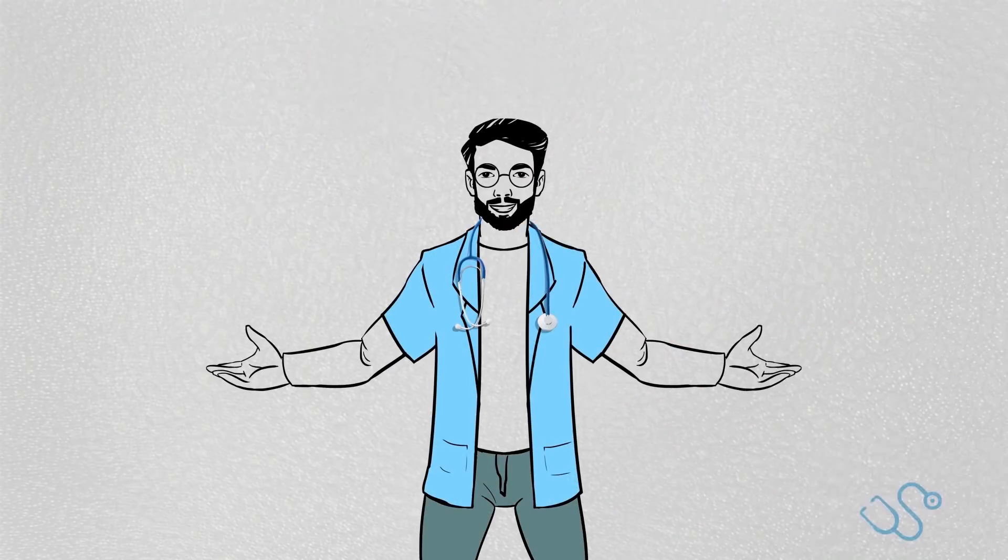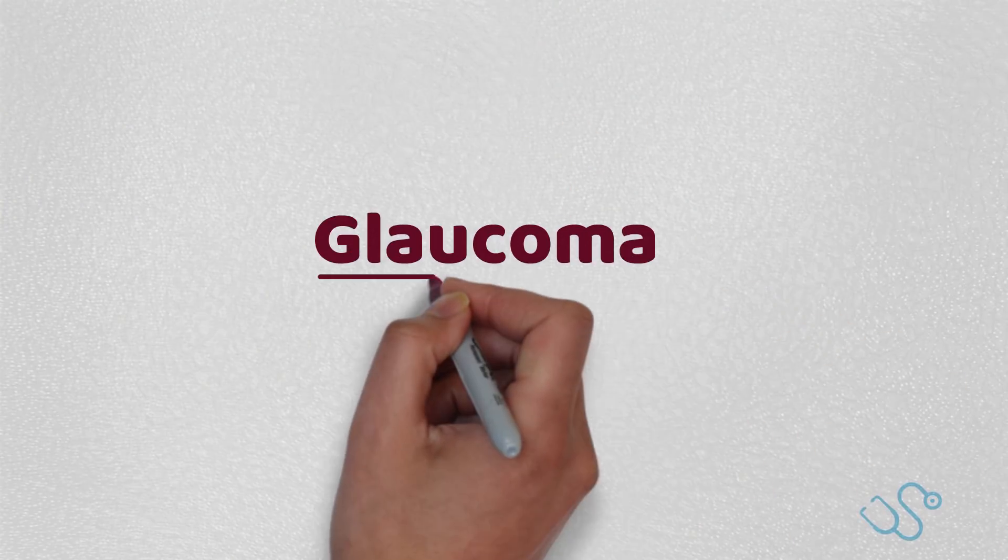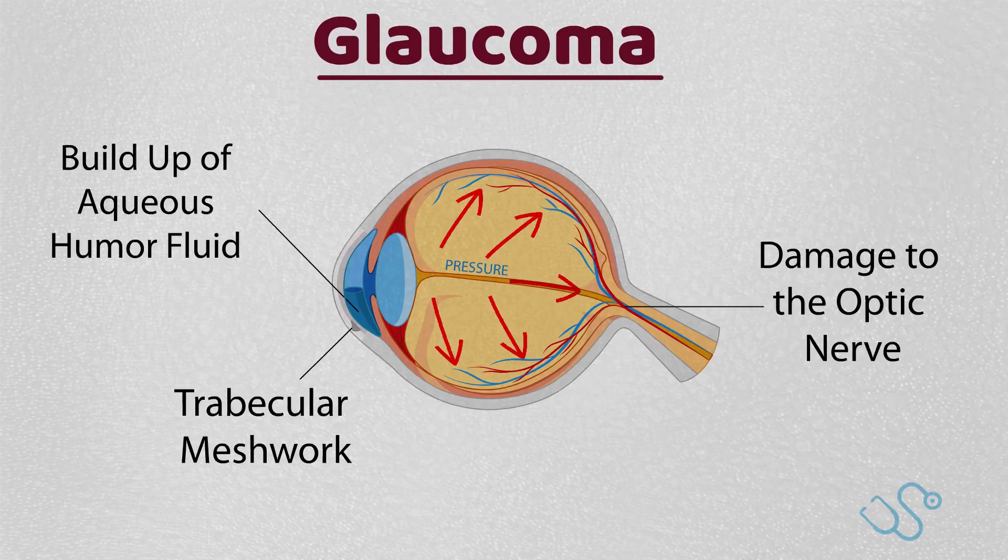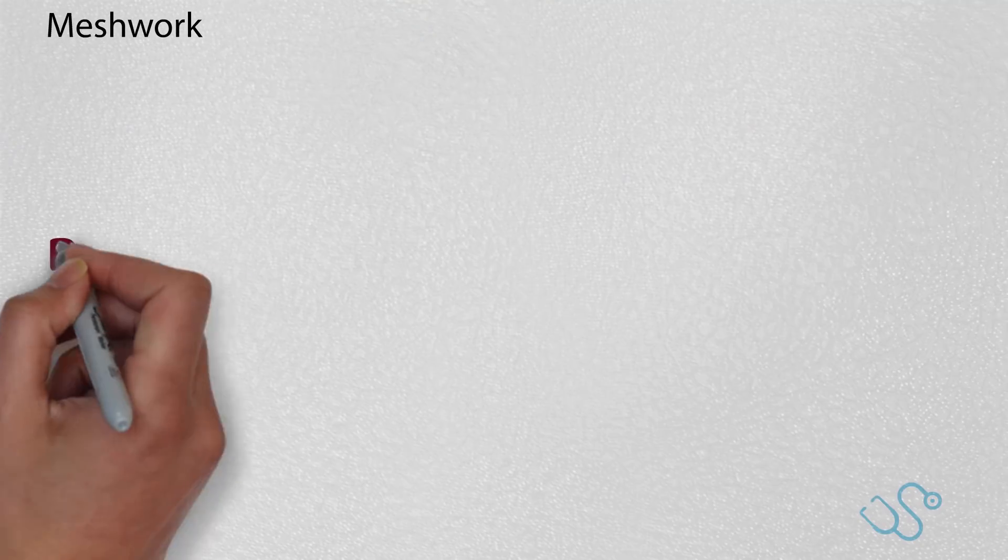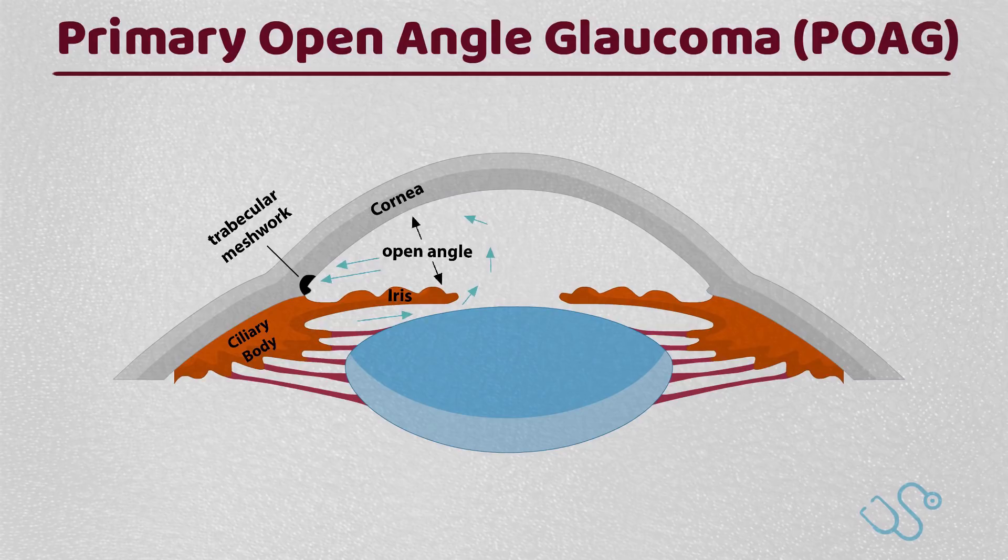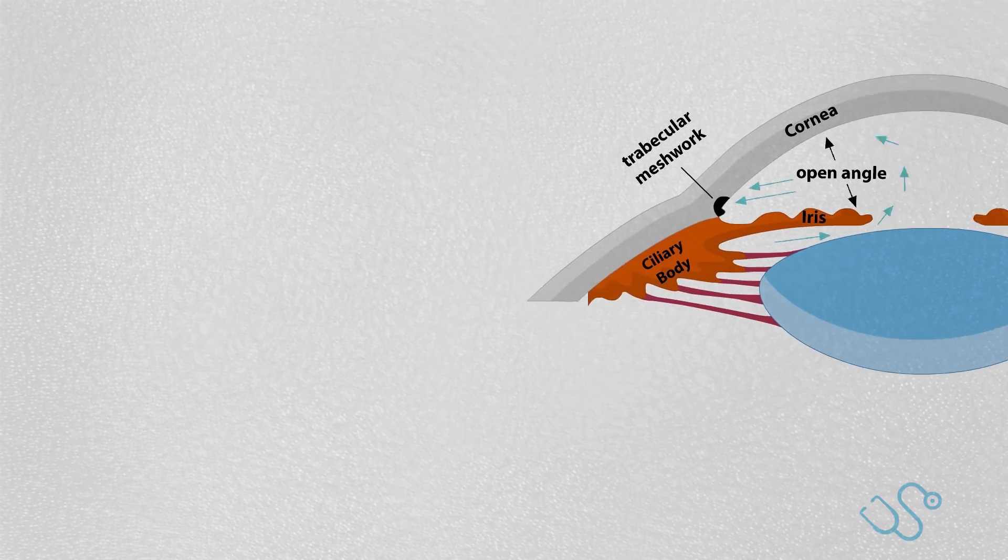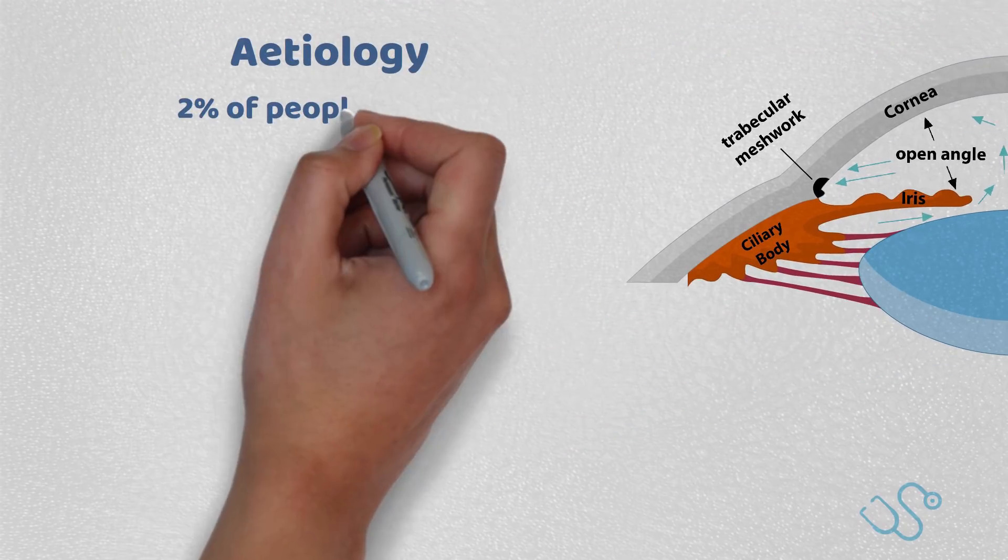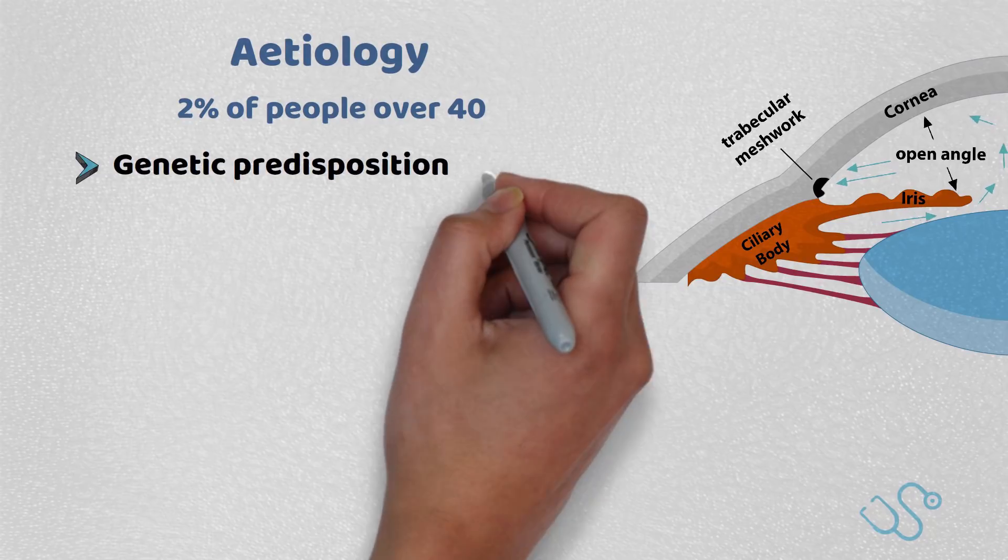Hi and welcome back. The focus of this week's video will be discussing glaucoma, both primary open angle and acute glaucoma. Let's start with primary open angle glaucoma, which is sometimes known as chronic glaucoma. First things first, all glaucomas are related to raised intraocular pressure, with about 2% of people over 40 suffering from it.